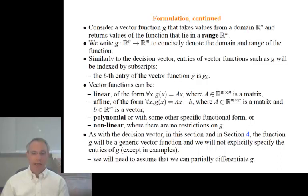An affine function is a function that is defined in terms of a matrix and a vector. g of x is affine if it's equal to ax minus b. By the way, that upside down A in the equation there means for all. I'm simply defining all of the values of g for all possible values of its argument. We can also have polynomial or non-linear functions. Just as with the decision vector, g will be generic, except in the examples. The only thing I'm going to assume about g is that I can differentiate each of its entries with respect to any one of the arguments. In other words, I'm going to assume that g is partially differentiable.